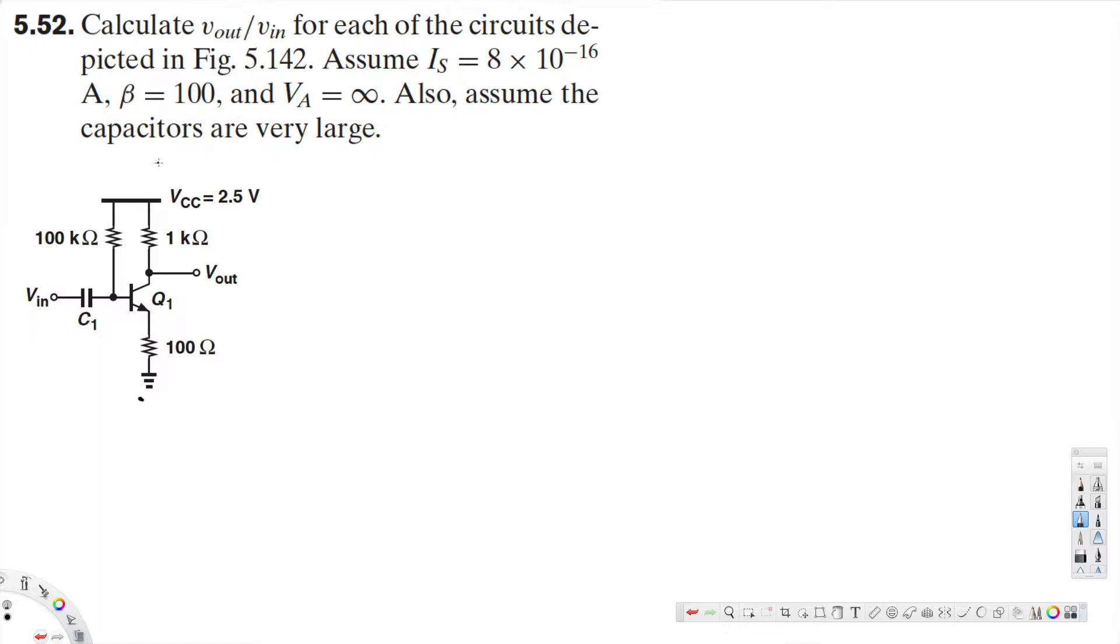Also assume the capacitors are very large. Now, the question is asking for the gain, that's v_out over v_input. Let's see how to do that. First, we're going to calculate the I_C current. To calculate this, we're going to apply KVL around here. Since the capacitors are very large, we'll take this one as a short circuit on the input side.